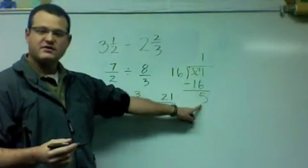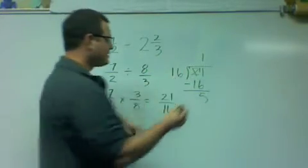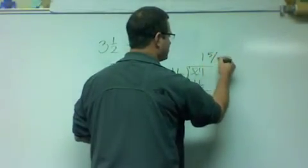I'm left with 5. This 5 becomes my numerator. This divisor is my denominator. 5 sixteenths.